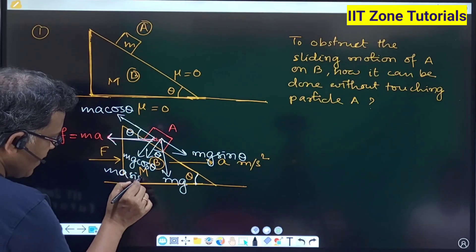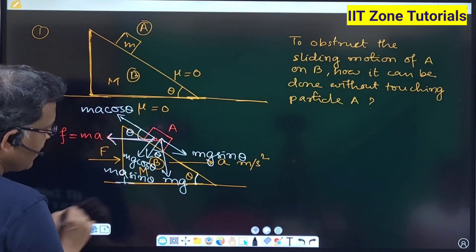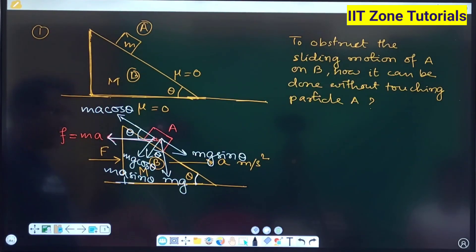This side it will be M A sin theta, right. Are you understanding it or not? So the moment when the numerical value of this M A cos theta